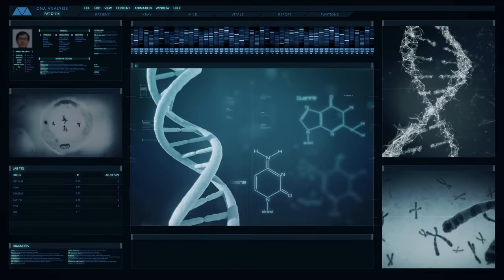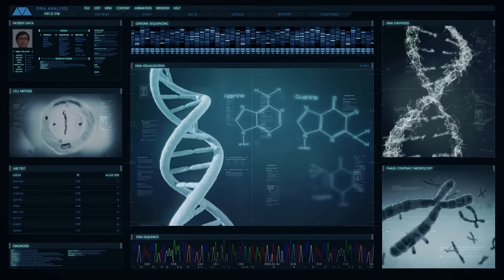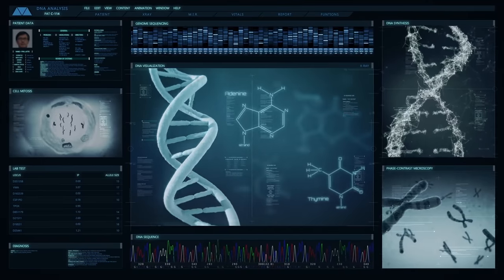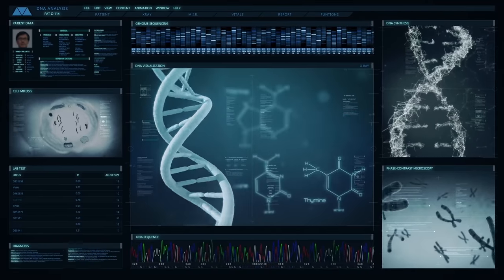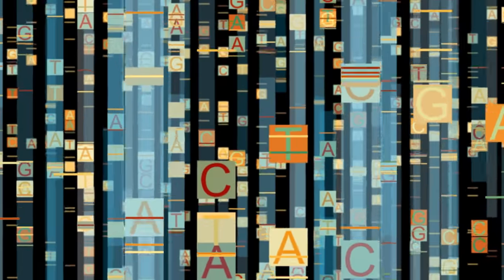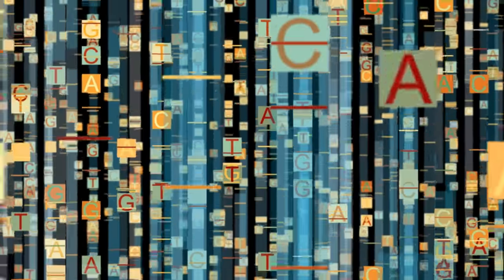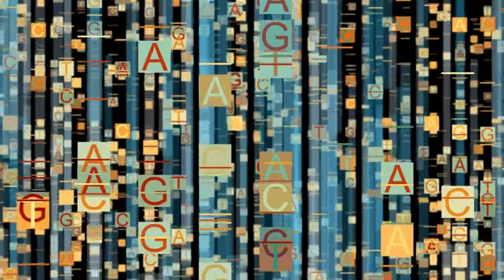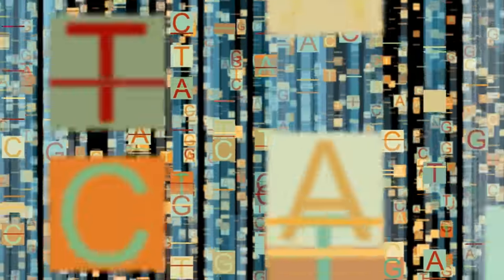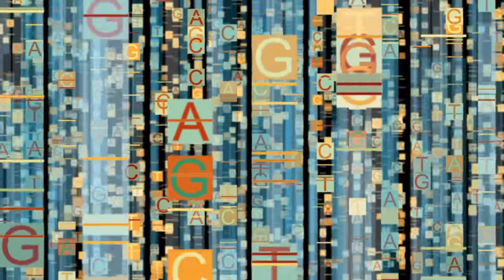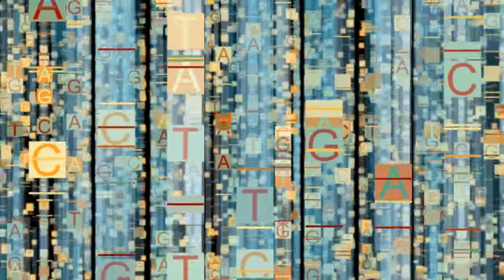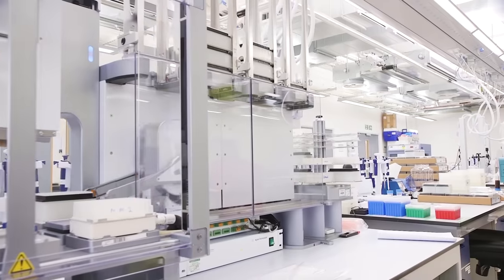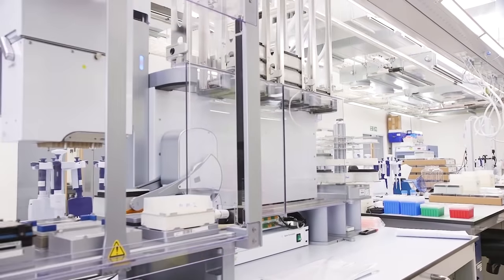Sequencing the genome means being able to read and record in order each of the 3 billion A, T, C, and G letters encoding the genome. DNA sequencing techniques have made incredible advances in the last decade, and we are now able to rapidly sequence DNA using sequencing machines.